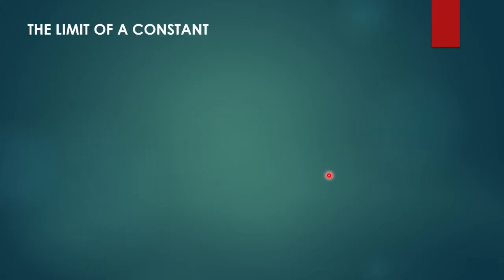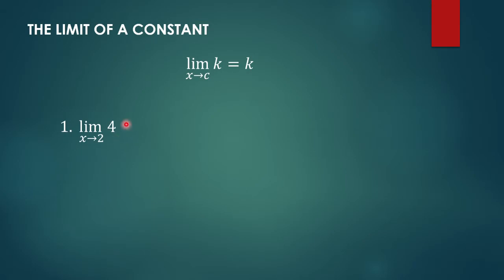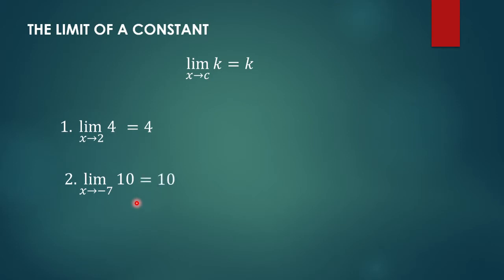Limit Theorems. First, we have the limit of a constant is the constant itself. So let's say we are asked to get the limit of 4 as x approaches 2. Since 4 is a constant, the limit is 4. The limit of 10 as x approaches negative 7 is 10. The limit of 2.15 as x approaches 5 is 2.15.